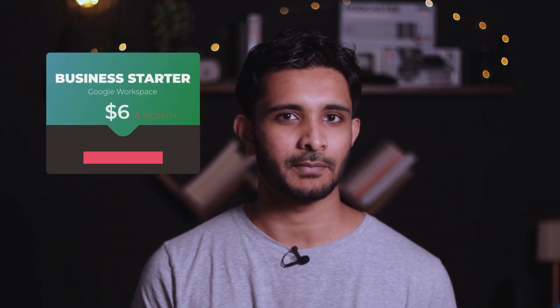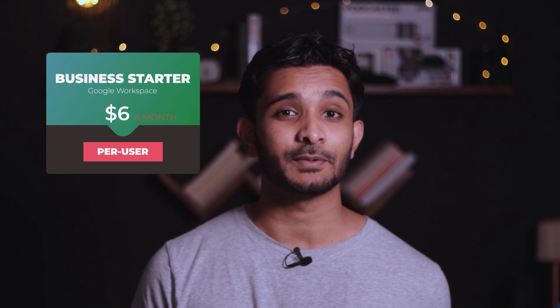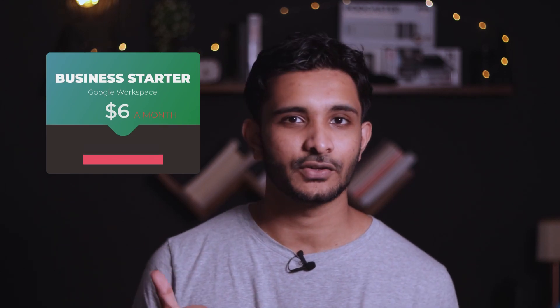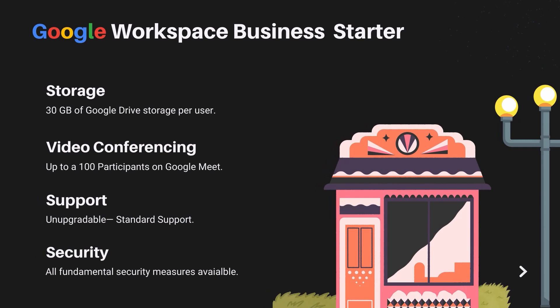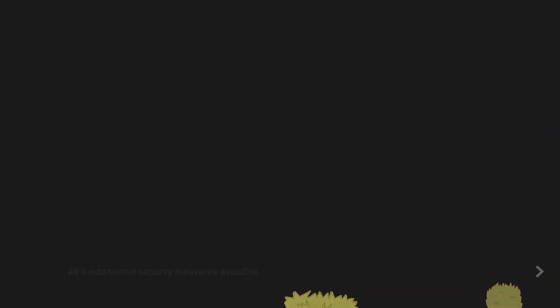First, we have the Business Starter plan, which is the cheapest plan you can get at $6 a month per user. It comes with 30 gigabytes of cloud storage per user on Google Drive. You can meet up to 100 participants on Google Meet, which is more than enough for a small business. You get standard support with no option to upgrade. Security-wise, you get all the basic security measures mentioned earlier.